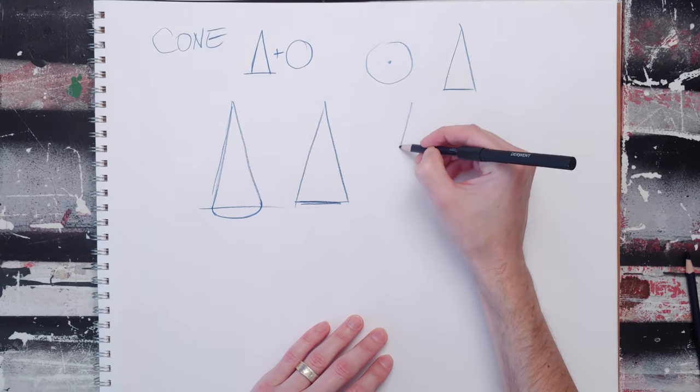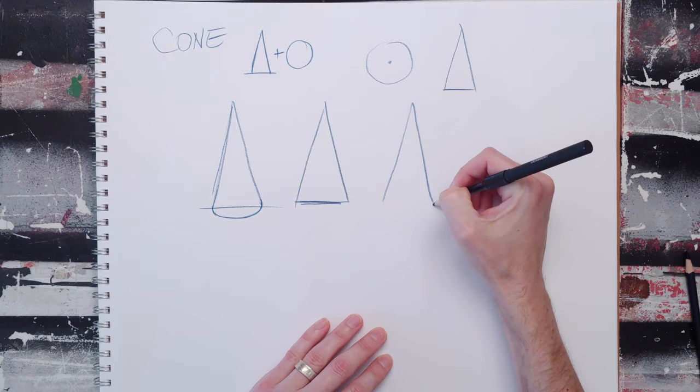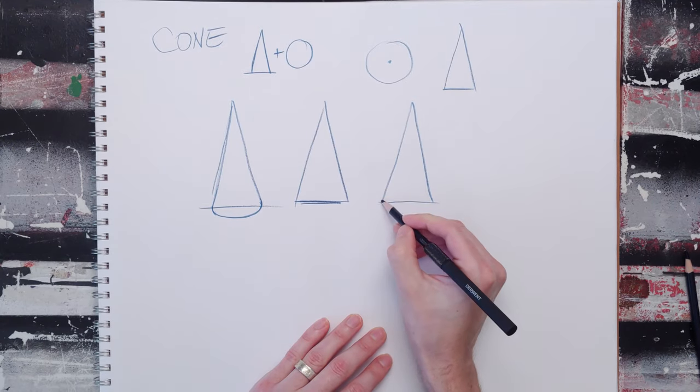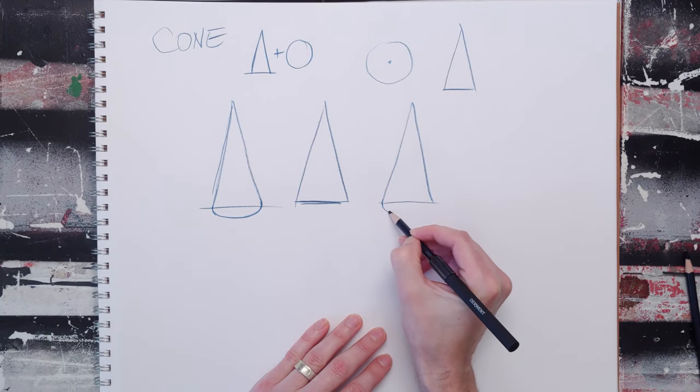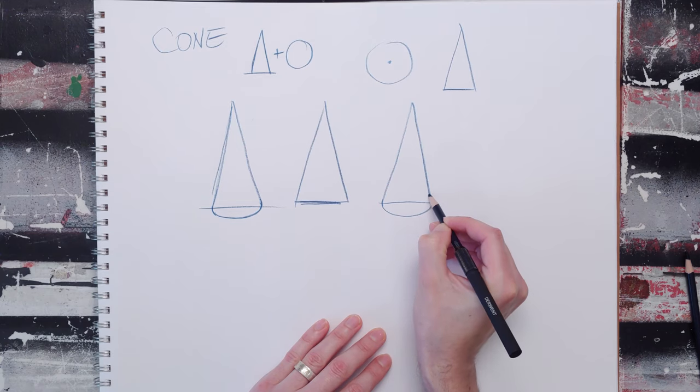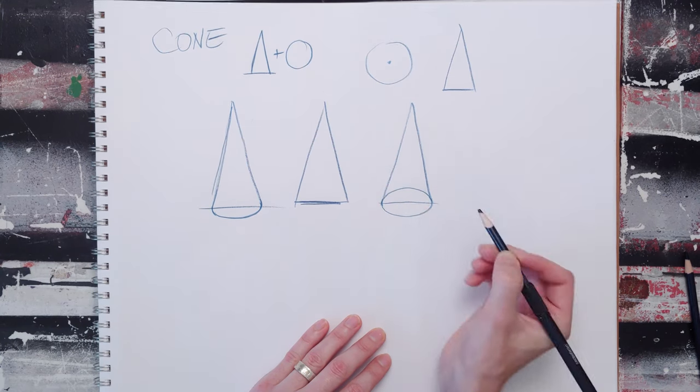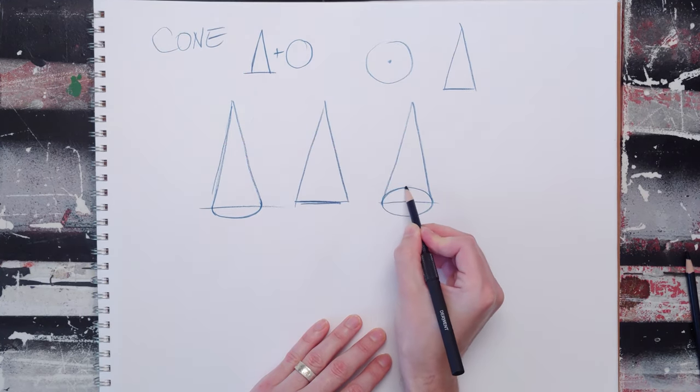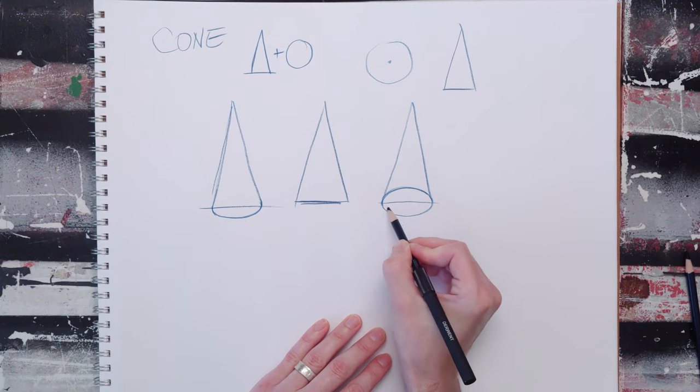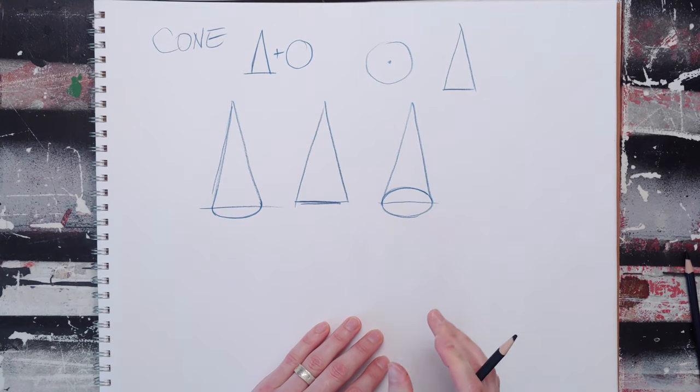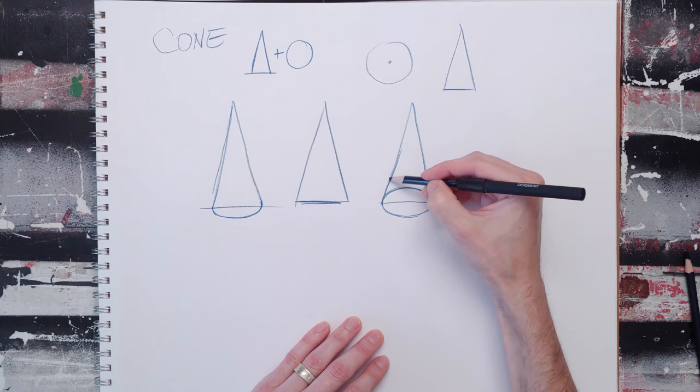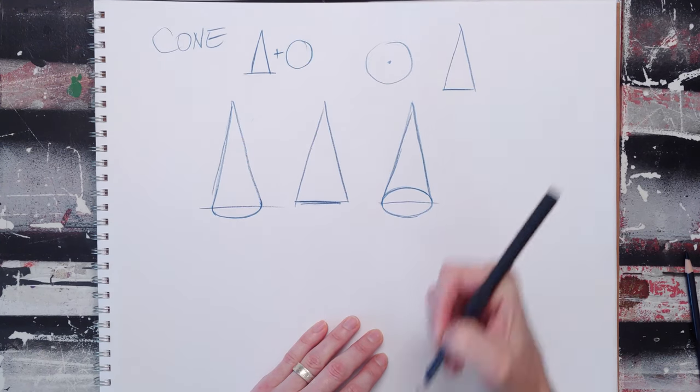Your other variation on the cone is you do your triangle and you show us two sides. So the cone suddenly has a bottom that you can see. This is if you're looking into the cone.